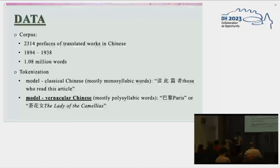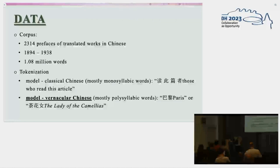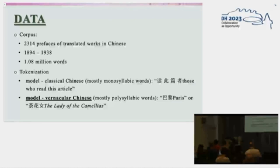The existing tokenizer models are specialized in either classical Chinese or vernacular Chinese, so there is no model actually suitable to do the tokenization for our data. We tested both models on the text and noticed that, because classical Chinese words are mostly monosyllabic, the classical Chinese models tend to split all the words into single characters, which is something we don't want.